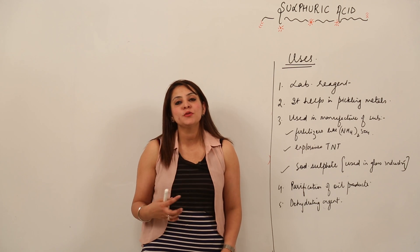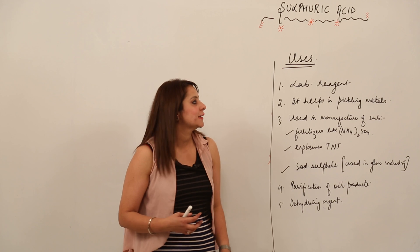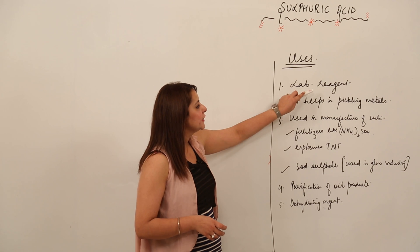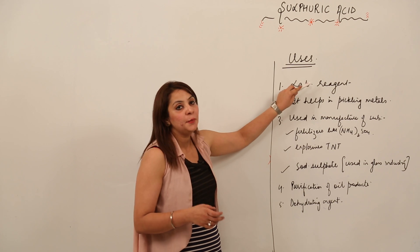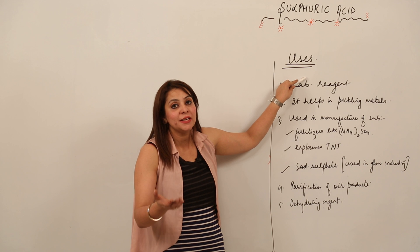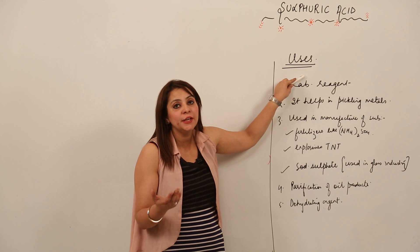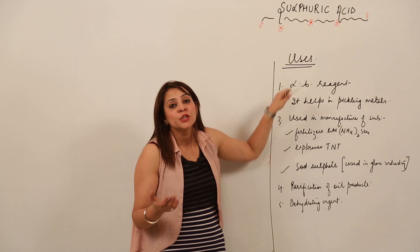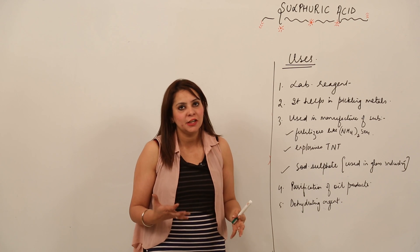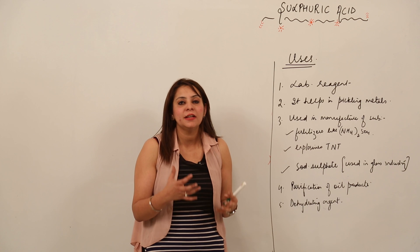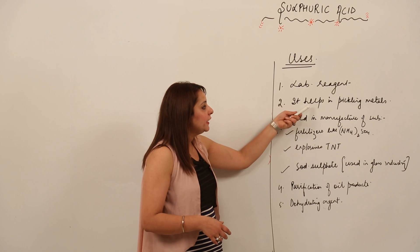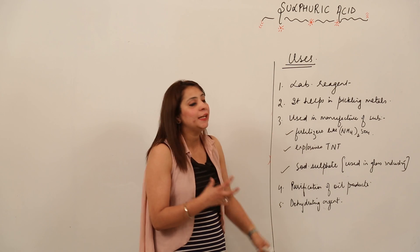Now it is time to look at the uses of sulfuric acid. First of all, it is used as a lab reagent. As I've told you, it is called the king of chemicals, so it is used in many laboratories and it acts as a reagent.